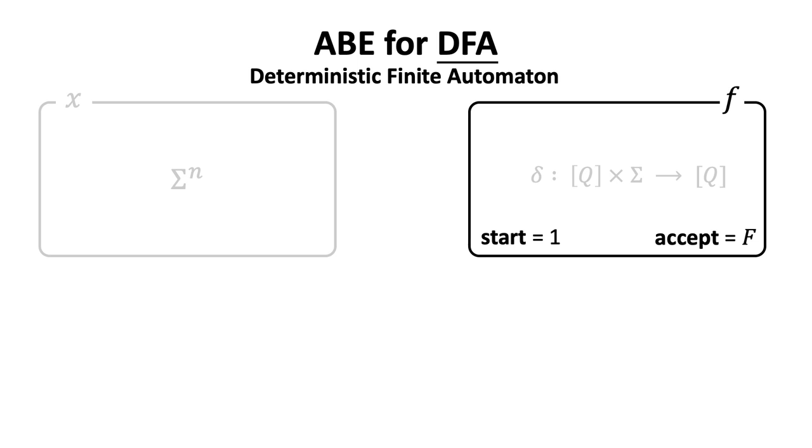We always have state 1 as the unique start state. The computation is carried out as follows. The machine starts with state 1 and reads input X bit by bit.